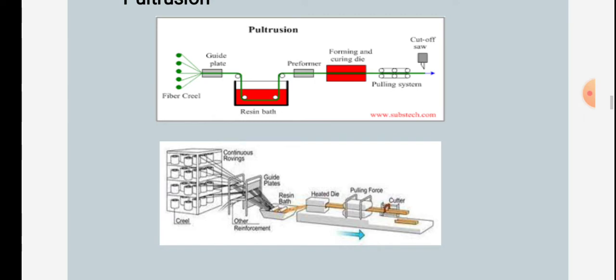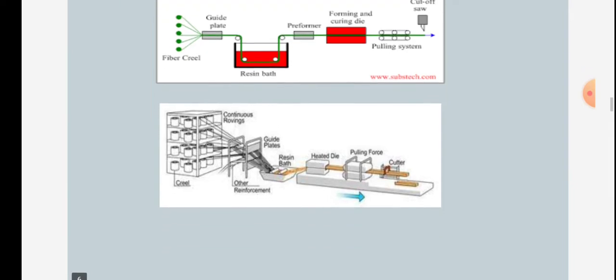Pultrusion is shown in the figure, which includes a guide plate, fiber creel, resin bath, preformer for forming and curing die, cooling system, and cut-off saw.